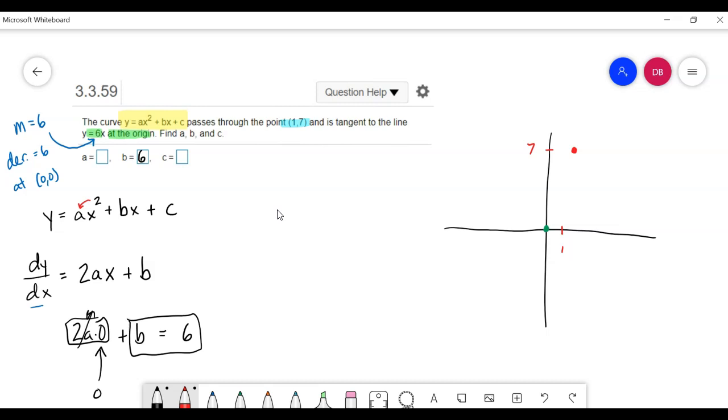So I know b is 6. Now I know the equation is y equals ax squared plus 6x plus c. Now, here's another thing that we know. We know that it's tangent at the origin. Well, that means it passes through the origin. If we're tangent at the origin, then that means the origin is a point on the graph. So that means when x is 0, y is also 0. So when I plug in 0 for x, I get out 0 for y. This part would go to 0, 6 times 0 would be 0 plus c. That means c is equal to 0.